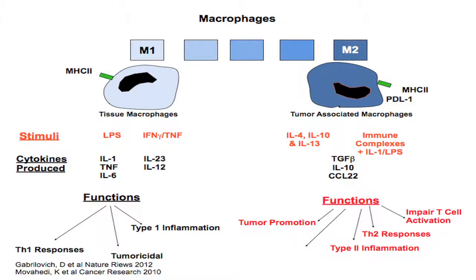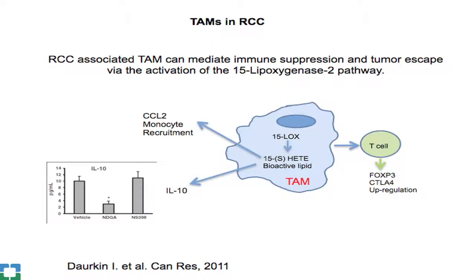Macrophages can also be part of the problem. In normal tissues, macrophages promote type 1 inflammation and tumoricidal activity. In the tumor milieu, cytokines and growth factors shift them toward an M2 phenotype, driven primarily by exposure to IL-4, IL-10, and IL-13, which drives these cells to suppress T cell function and promote immune suppression. In kidney cancer specifically, tumor-associated macrophages (TAMs) show upregulation of the lipoxygenase pathway, producing lipids that promote monocytic infiltrates, reduce IL-10, and induce T regulatory cells.